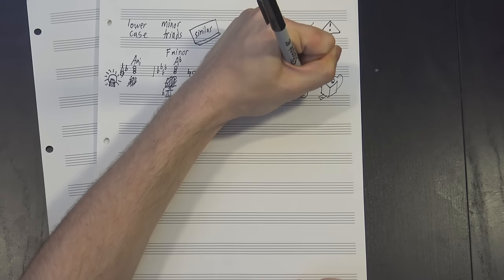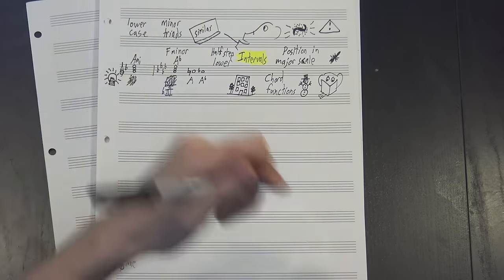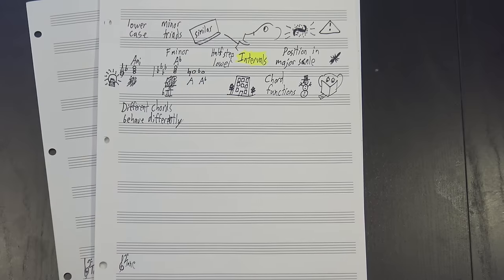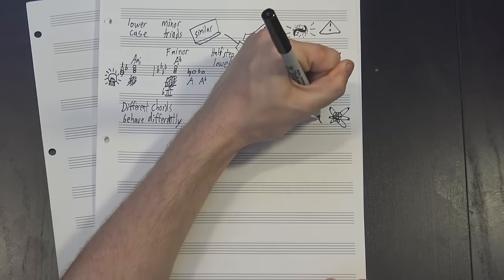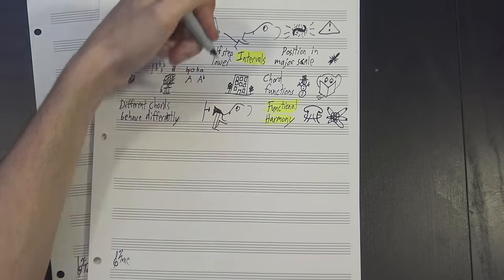Anyway, back to chords, there's one more thing we need to talk about: chord functions. Modern music theory is built on the idea that different chords in a key behave differently based on what notes they contain and how those notes interact. This is called functional harmony, and we tend to break chords into three main groups.